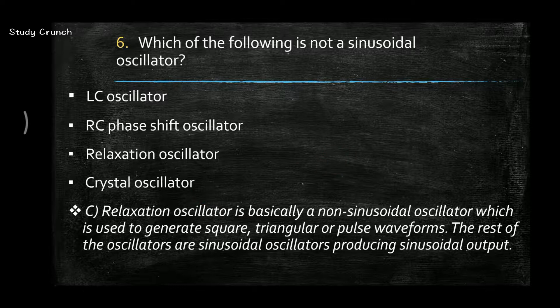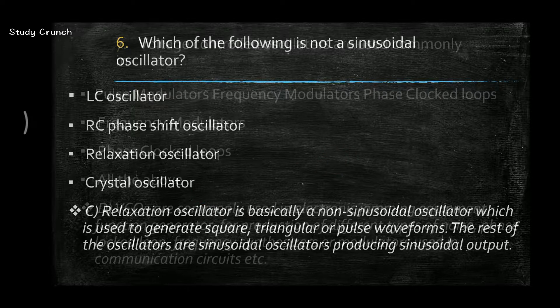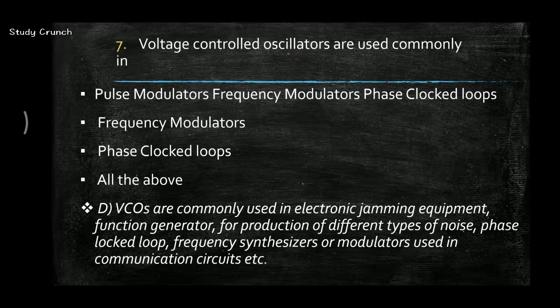Next, voltage control oscillators are used commonly in phase modulators, frequency modulators, and phase lock loops. So the answer is D, it is used in all of the above. It is used in electronic jam equipment, frequency generators for the production of different types of noise, phase lock loops, and frequency synchronizers.